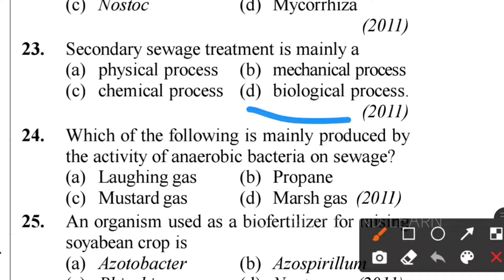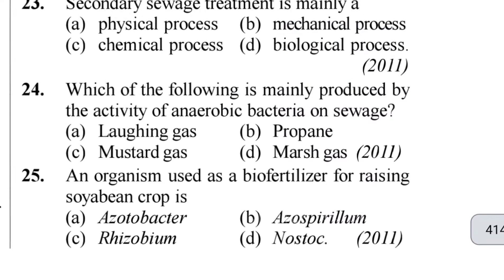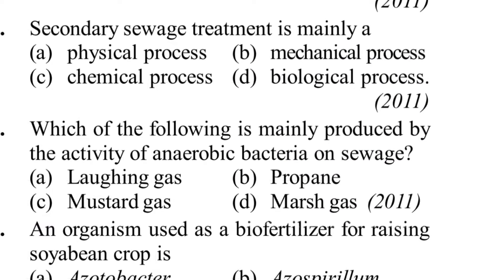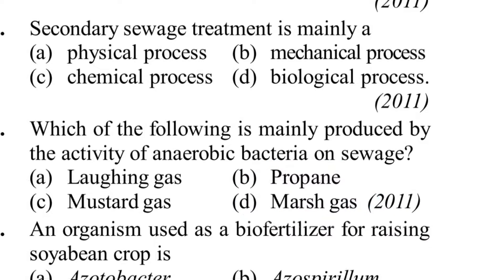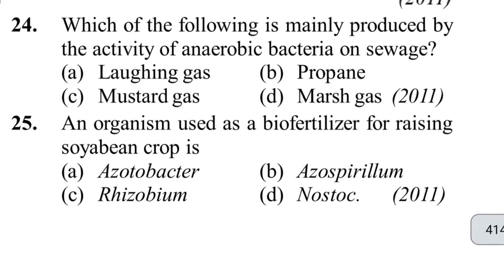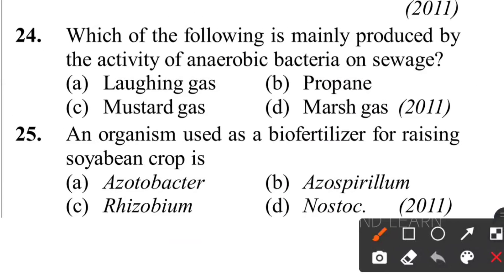Twenty-fourth question: which of the following is mainly produced by the activity of anaerobic bacteria on sewage? The answer is marsh gas. Marsh gas is also called methane gas and is mainly produced by the activities of anaerobic bacteria on sewage. Marsh gas means methane gas only.